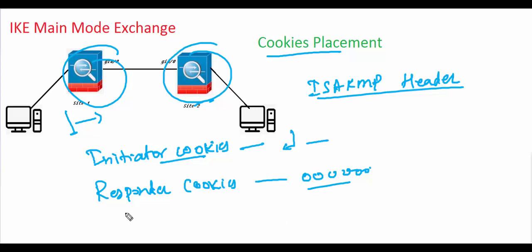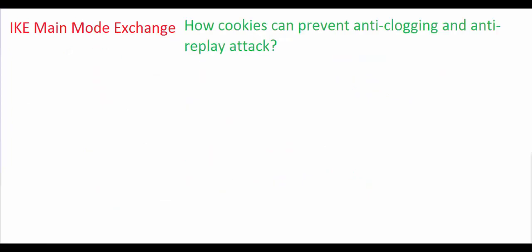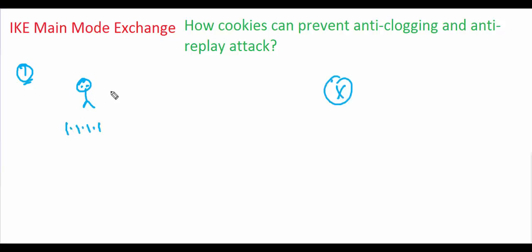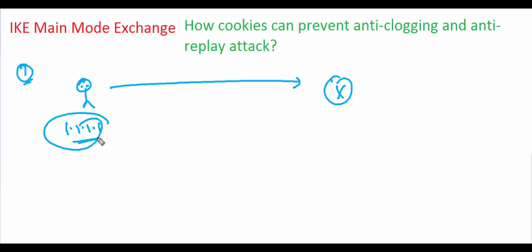Now, how can cookies prevent anti-clogging and anti-replay attacks? Consider a few attack possibilities. In the first scenario, an attacker with IP address 1.1.1.1 sends a negotiation request using his real IP address, gets a responder cookie back, and uses it to launch a resource-clogging attack. However, if he uses his real IP, his identity is exposed and we can easily block him — so this is not a serious threat.